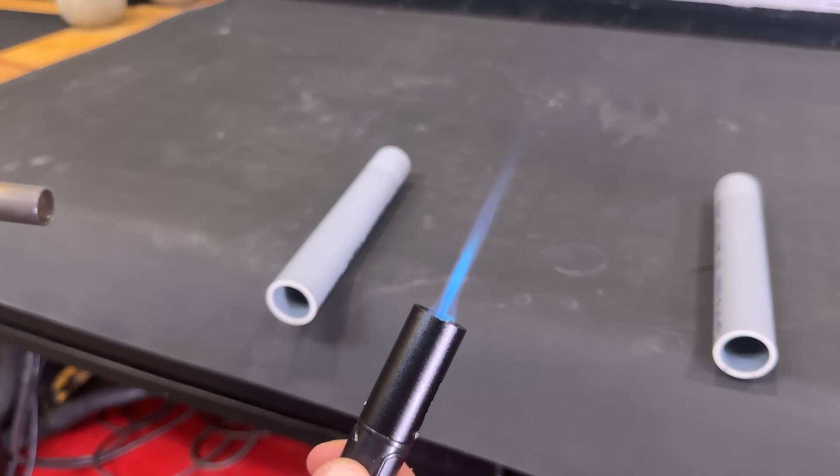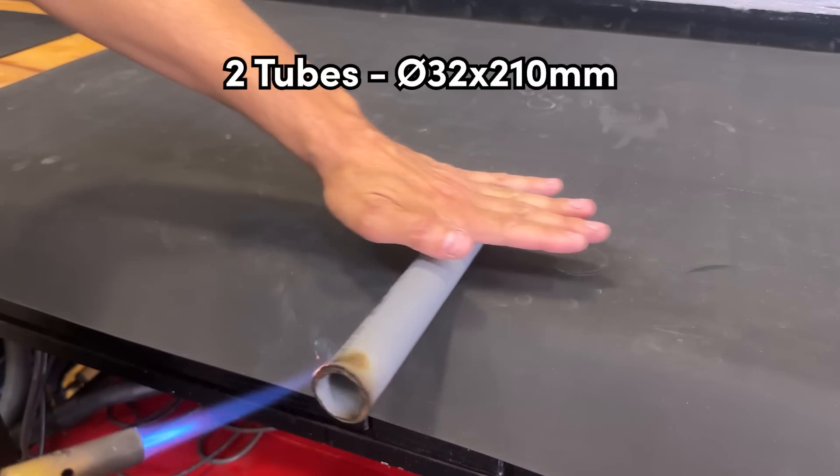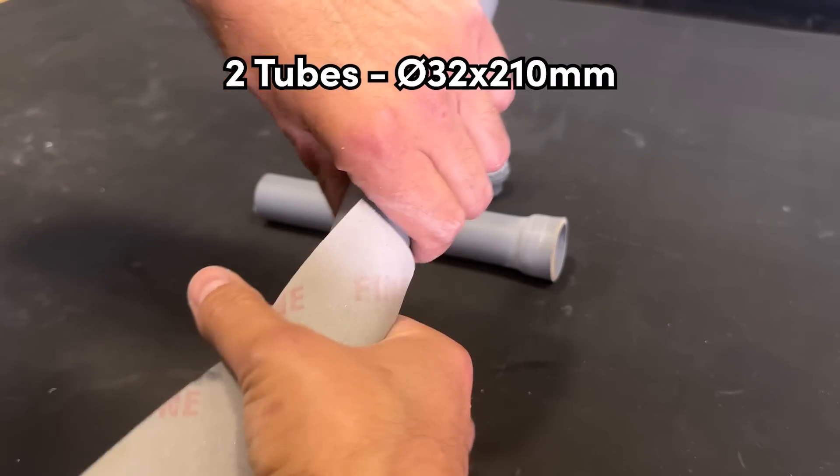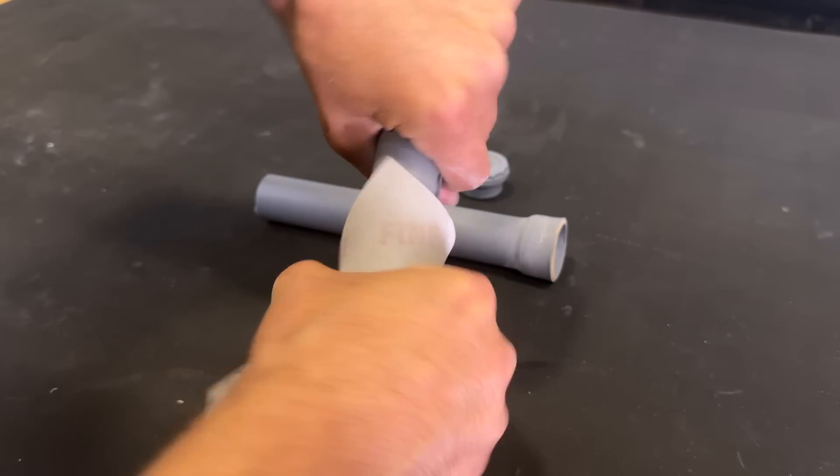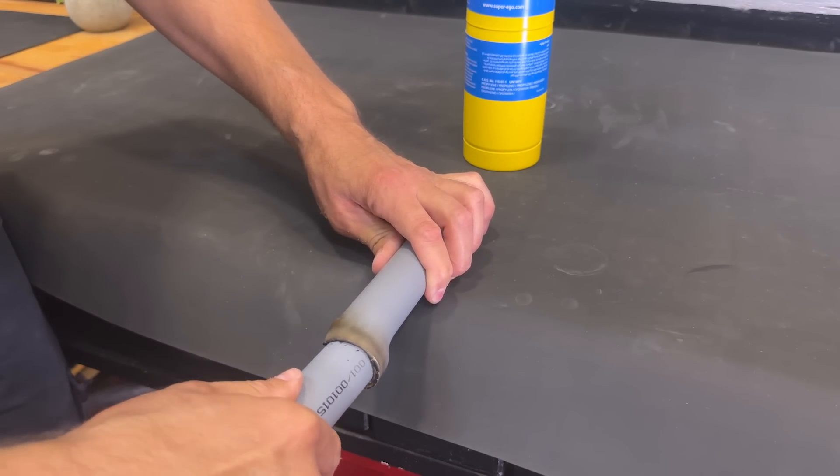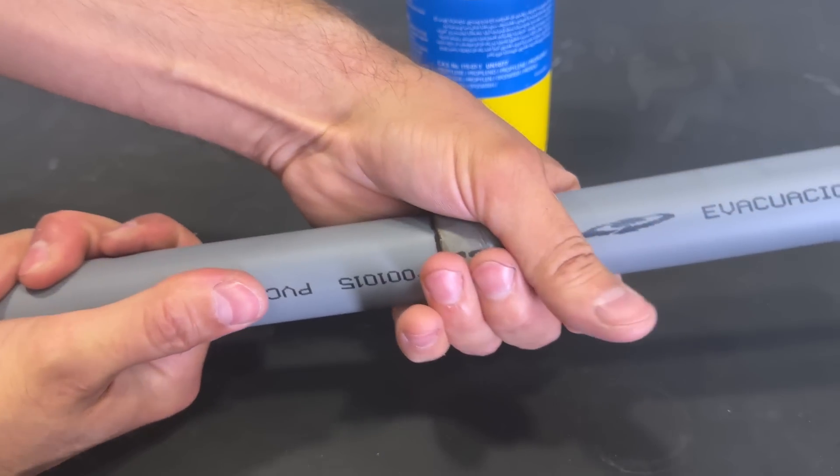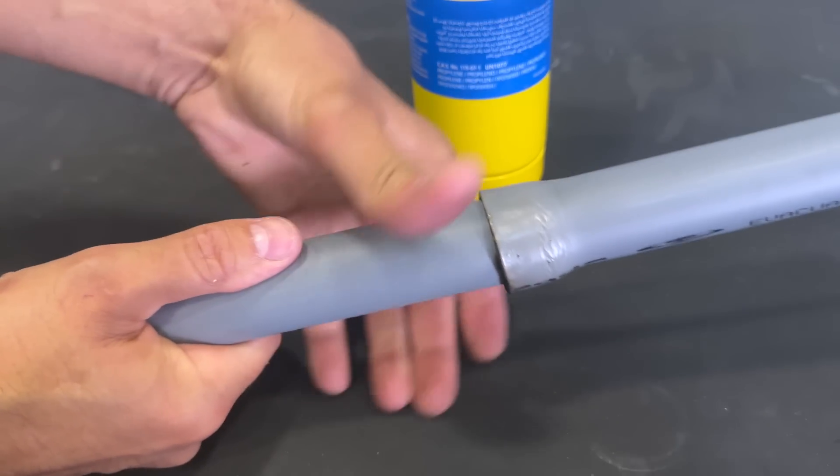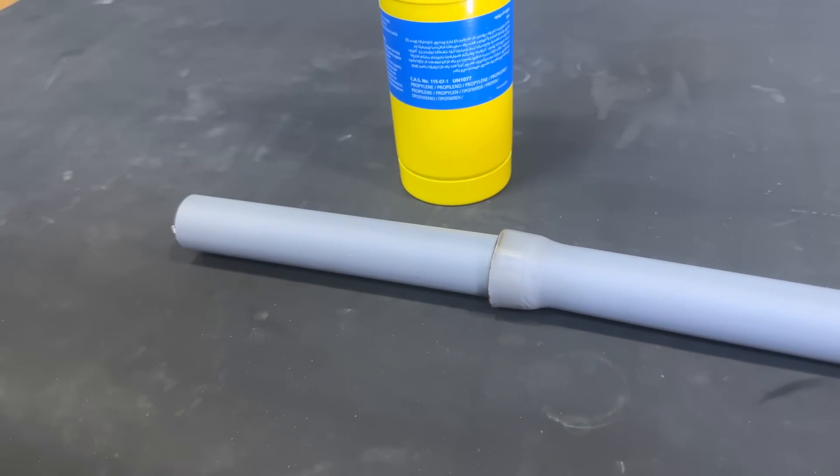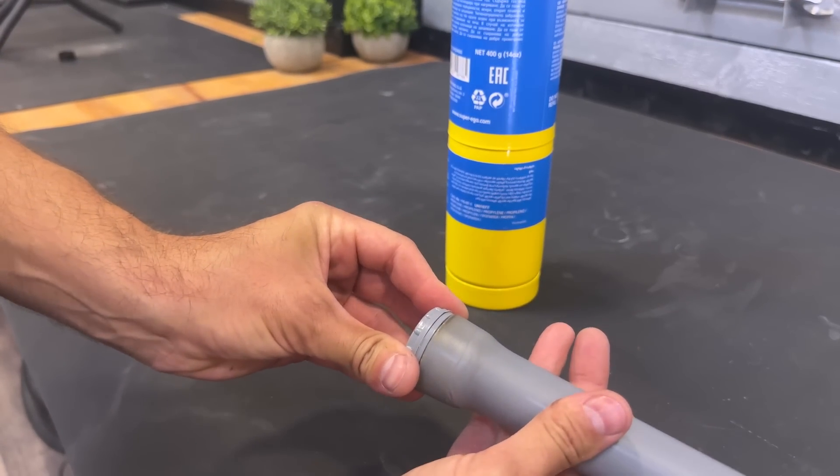We continue heating and expanding one end of each of these 32 for 210 millimeter PVC pipes. As we did before, we insert one end into the other to expand it to the correct size. When the pipe cools, we check that the plug fits perfectly.